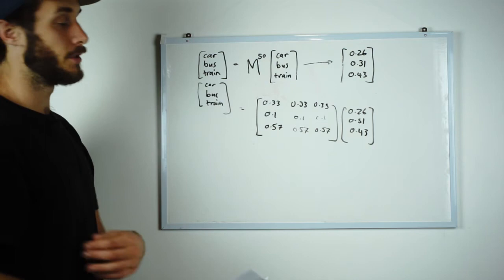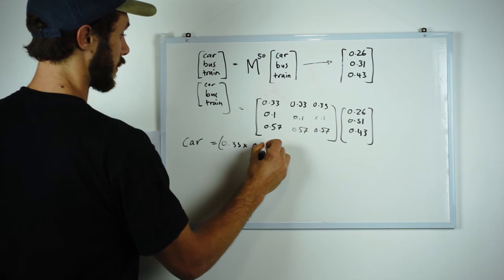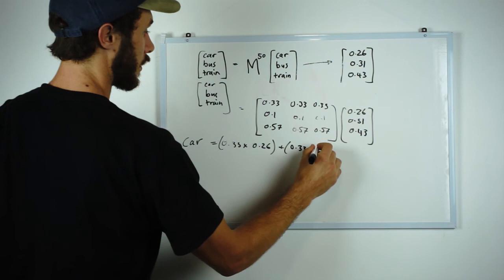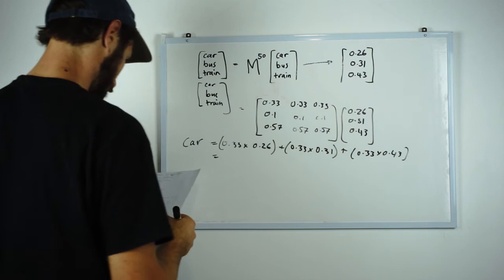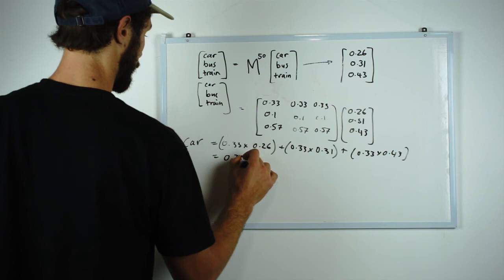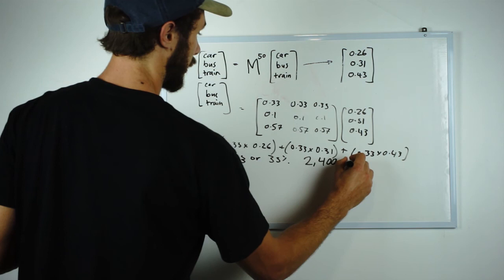So it's simply the percentage car passengers equals 0.33 times 0.26 here and here plus 0.33 times 0.31 plus 0.33 times 0.43. So we find that the total car passengers comes out to be around 0.33 or 33% and if we take that over the total then we get 2,400 car passengers as the long-term distribution.